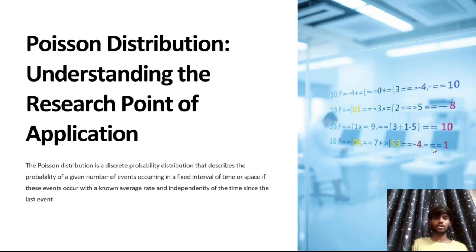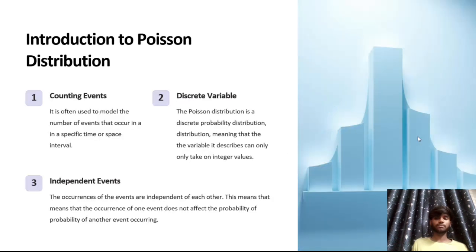The Poisson distribution is a discrete probability distribution that describes the probability of a given number of events occurring in a fixed interval of time or space, if these events occur with a known average rate and independent of the time since the last event.